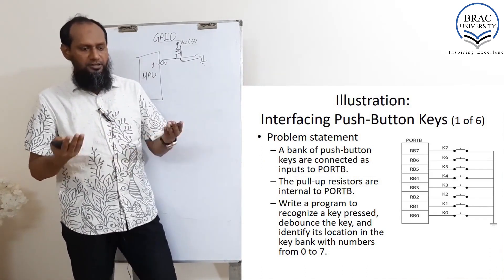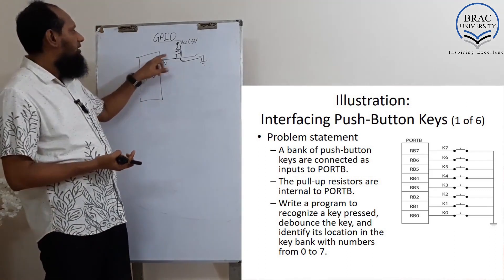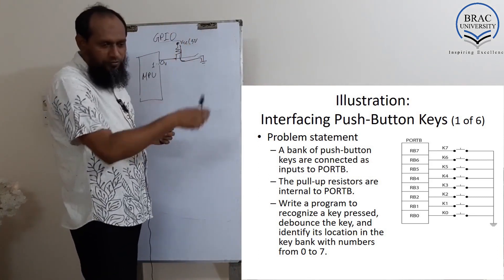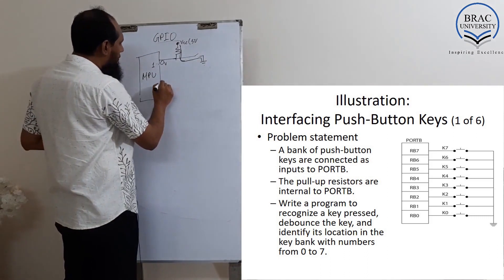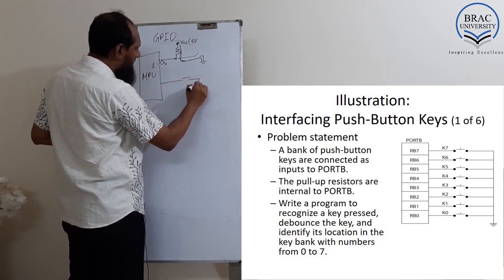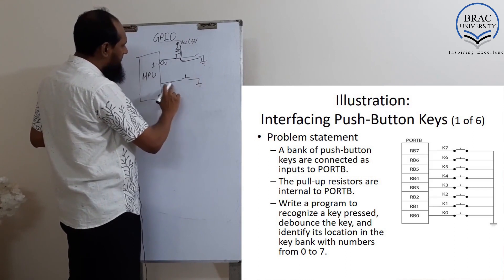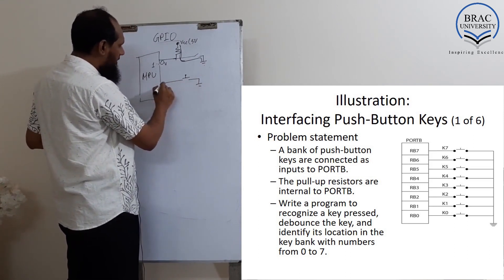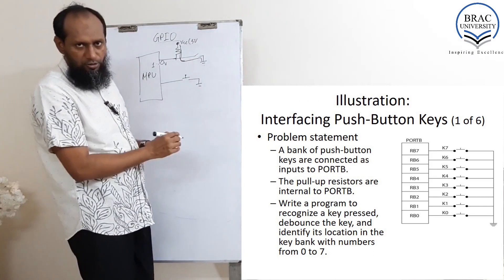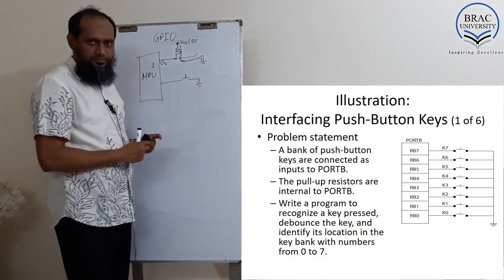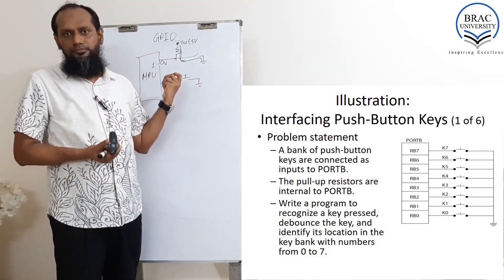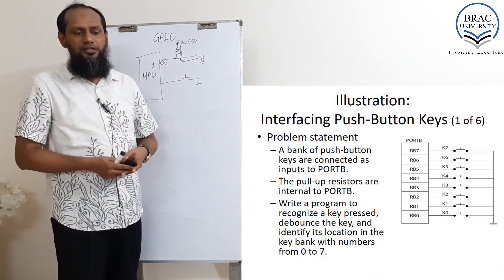This is the configuration of the push button. It is almost the same, but there is a slight difference. One is a common anode type configuration and the other is a common cathode type configuration. When you push, it will be a short connection, meaning it will become ground — ground means zero. If you release it, there is no connection — tri-state — which can be considered as one. By using this concept, a push button key can be used.